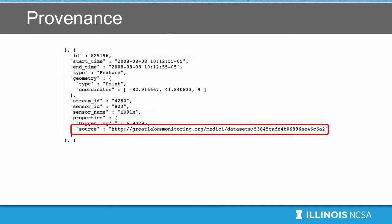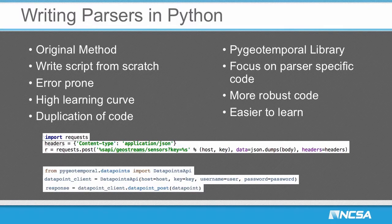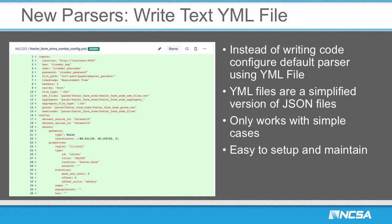We write data parsers primarily in Python. Originally anyone could write them however they wanted, but different developers wrote them in different ways, which became a mess. We started creating a pygeotemporal library to make parsers more consistent across the board, improving robustness and helping new developers. The latest thing we're building and testing is a way to configure parsers using YAML files — without writing Python code. This doesn't work in all cases, but when it does work it's very nice to maintain since you just have the configuration.